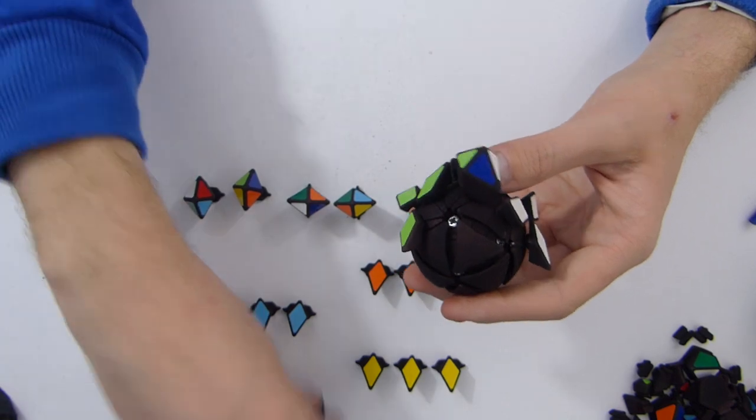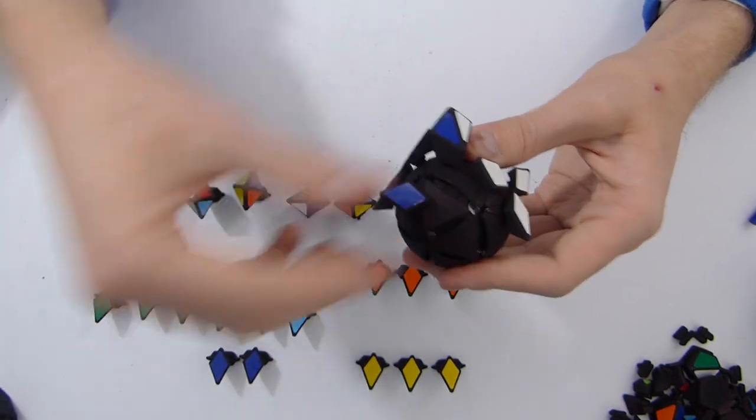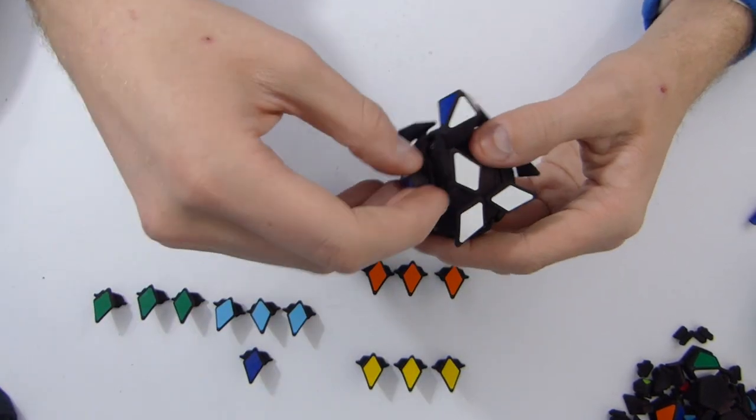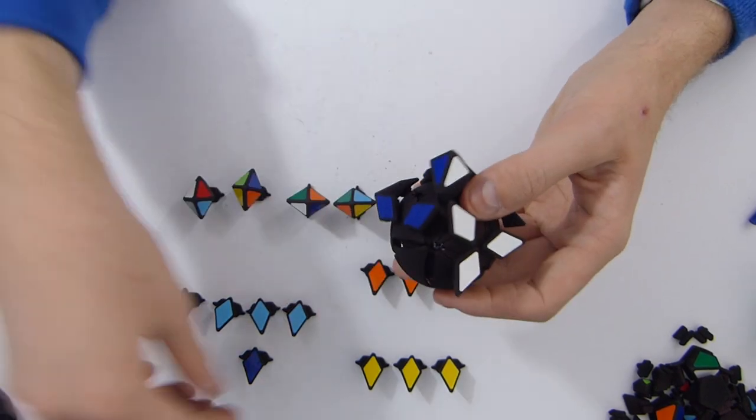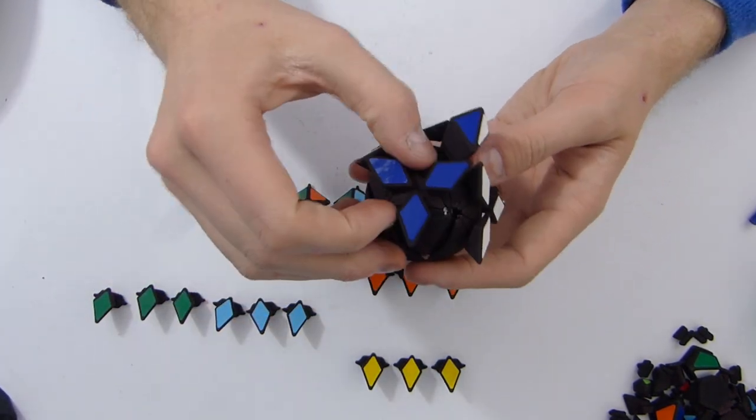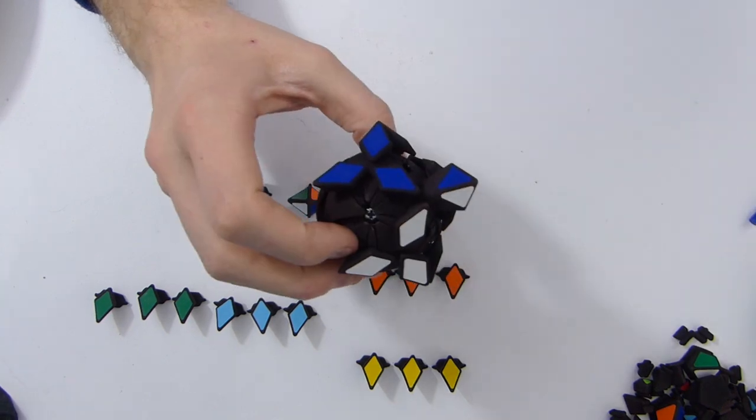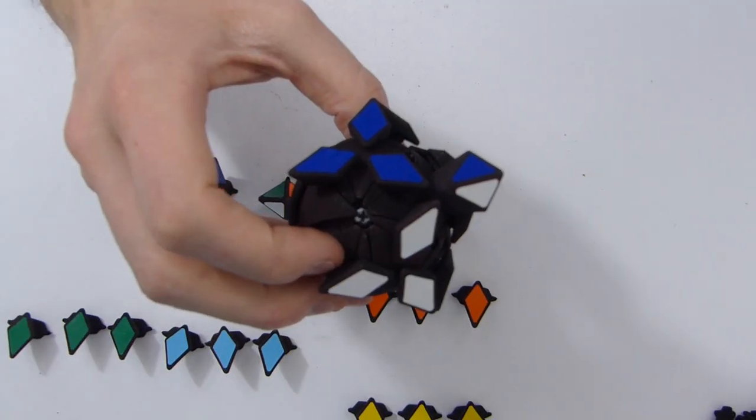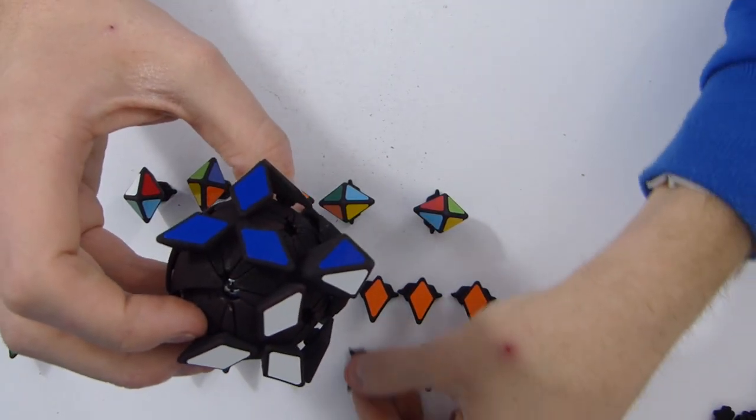And then, there's the blue face, dark blue, right there. So, I'm going to assemble the three edges, just like the other faces, just like this. Okay, I'm going to try to zoom in a bit, so you can see more clearly.